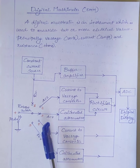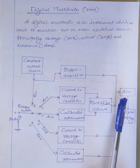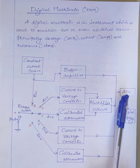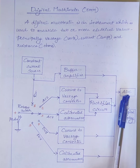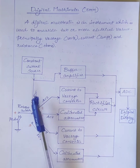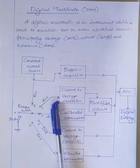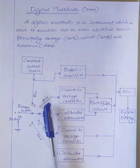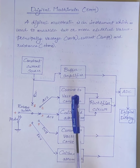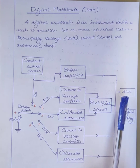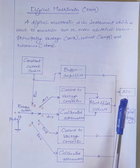In digital multimeters, the input to the analog to digital converter should be a voltage signal. Therefore, if we want to measure resistance and current, we have to convert resistance and current into a proportional voltage value, and then give it to the analog to digital converter.